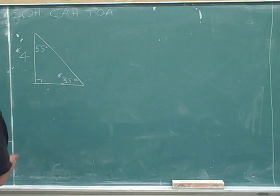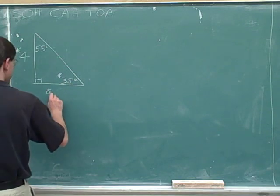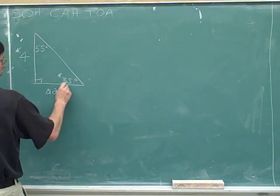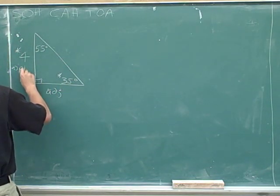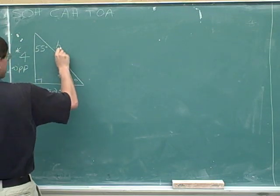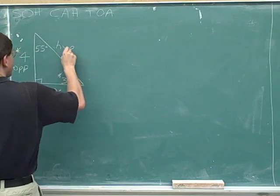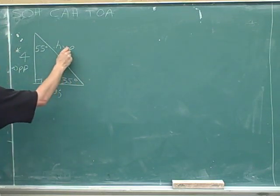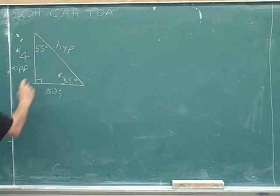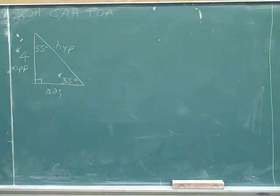Let's label the sides: this horizontal side is adjacent to the asterisk angle, this vertical side is opposite to the asterisk angle, and this side is the hypotenuse — we know it's the hypotenuse because it's opposite to the right angle.